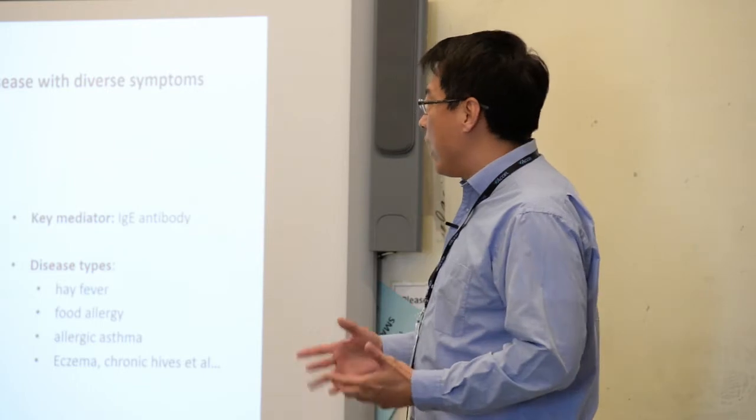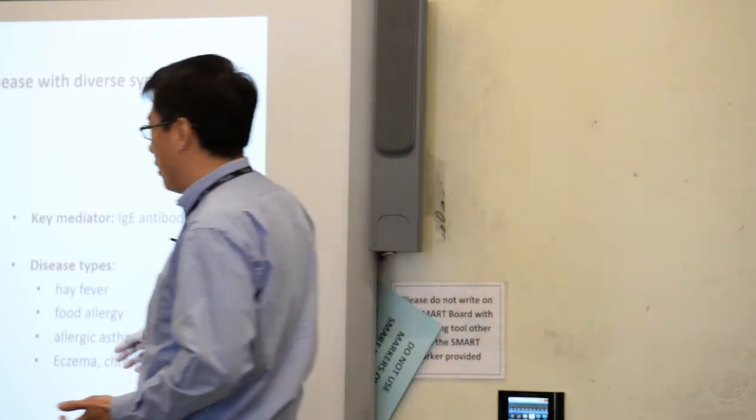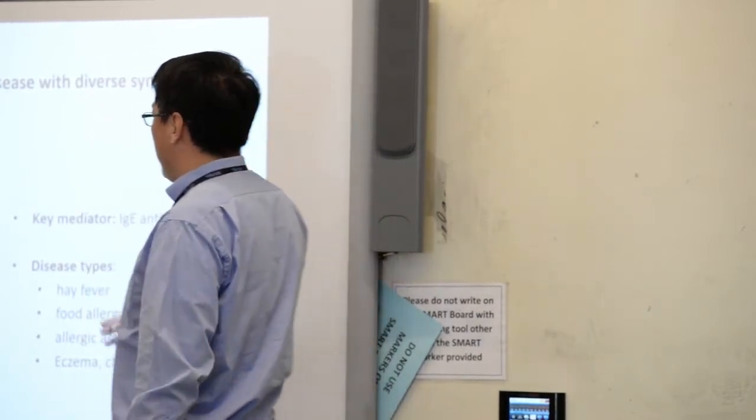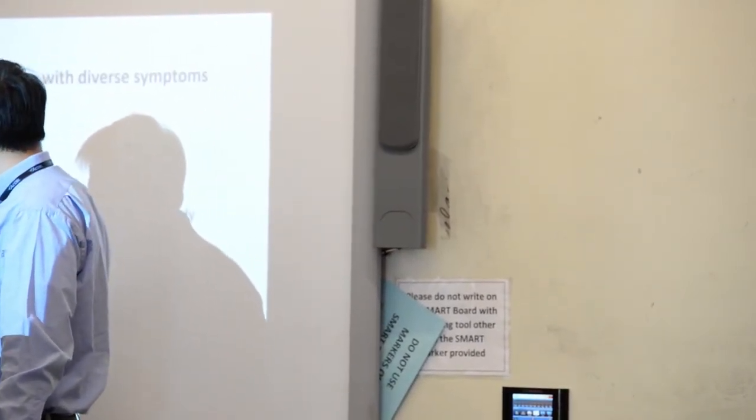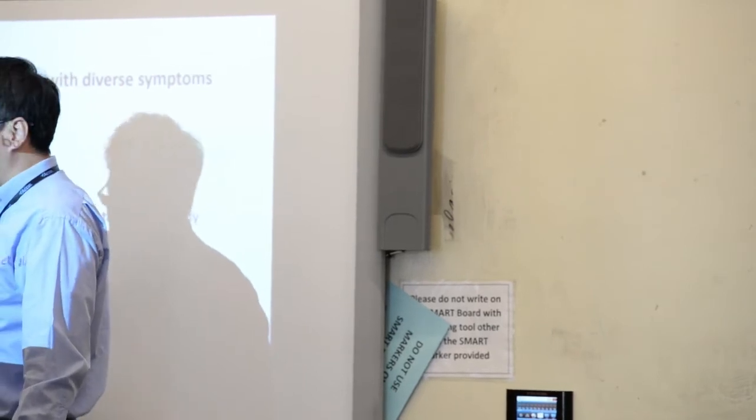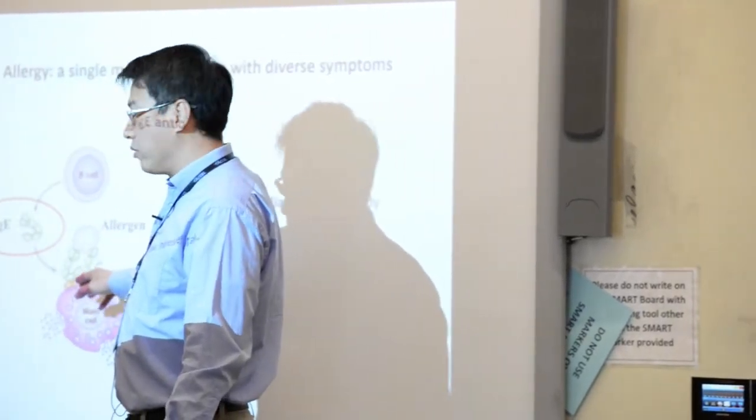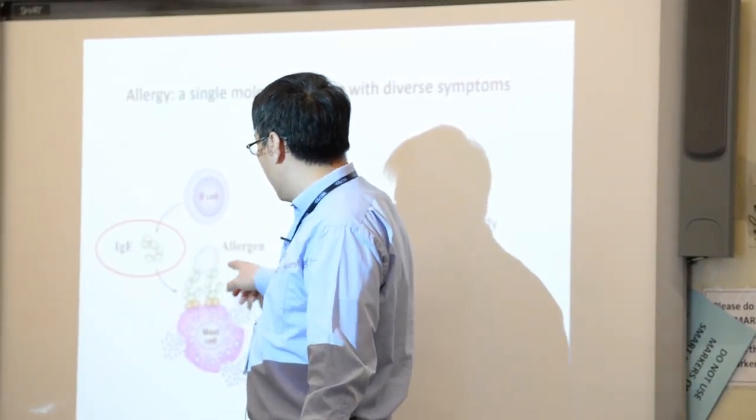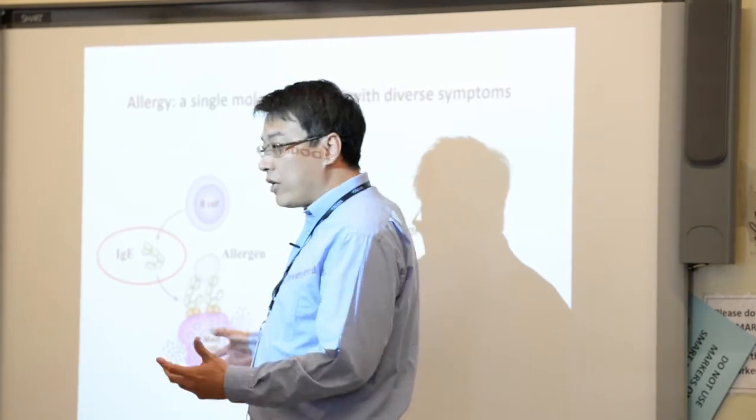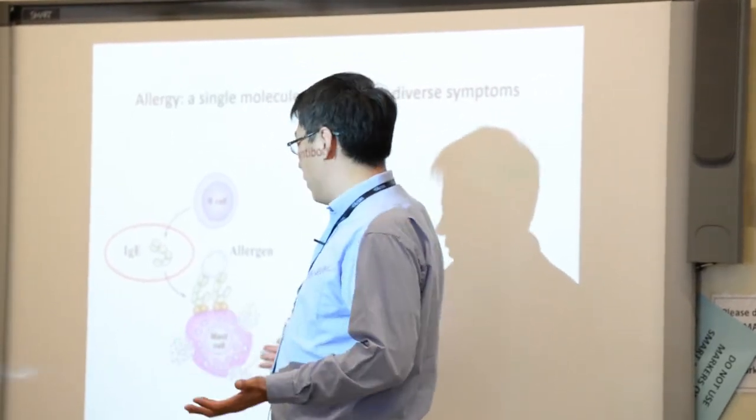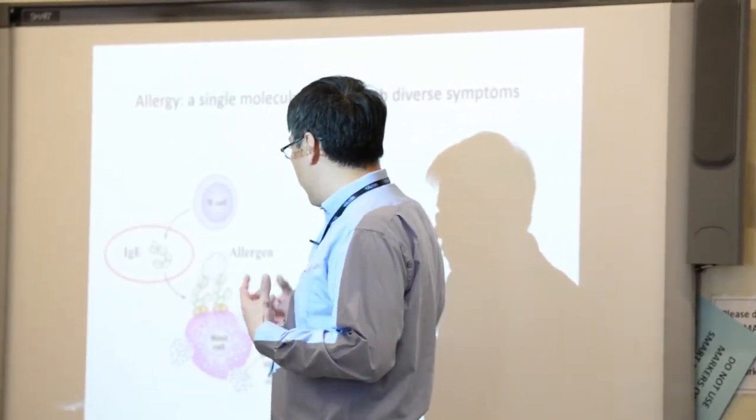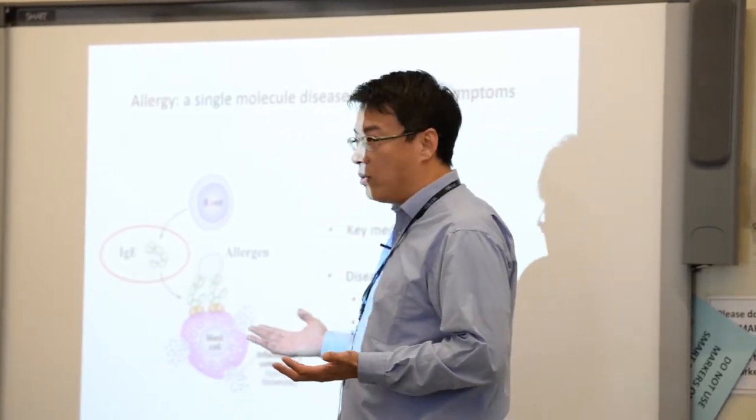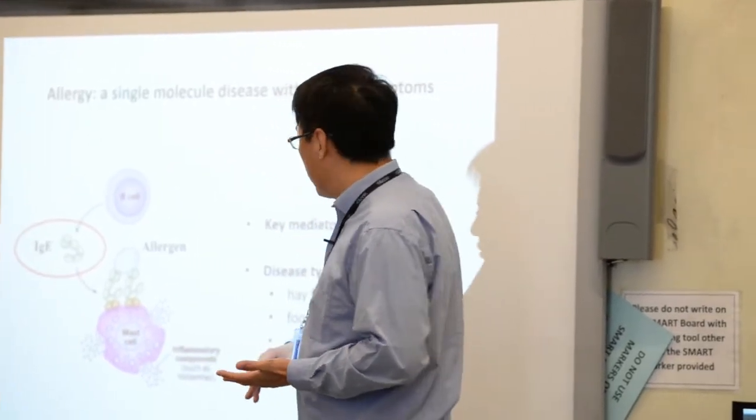Allergy, in essence, is a single molecule disease. It's mediated by this special antibody called immunoglobulin E or IgE. It's secreted by B-cells and bound to the high affinity Fc-epsilon receptor-1. Upon cross-linking by the allergen, it triggers the degranulation of mast cells or basophils and the release of inflammatory compounds, for example cytokines, histamine, chemokines, and so on.